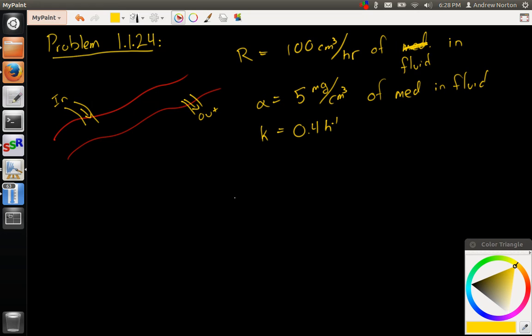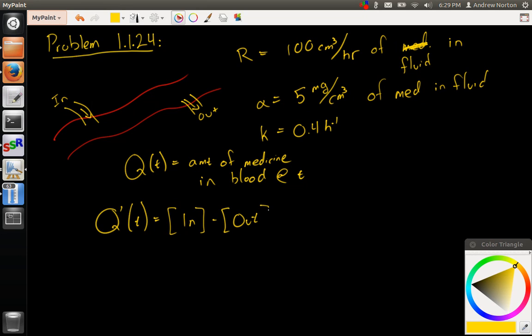That tells me I'm going to let Q of T be the amount of medicine in the blood at time T. So that means that the change in T is obviously in minus out, right? That's just like the definition of change.